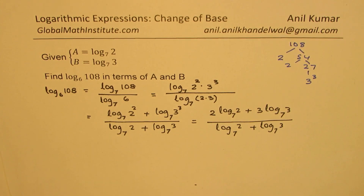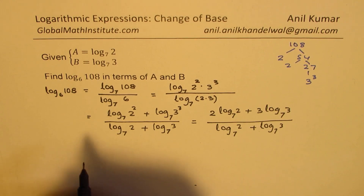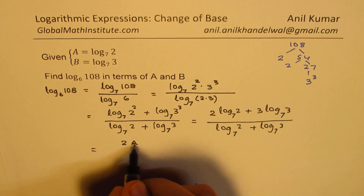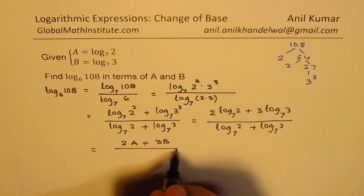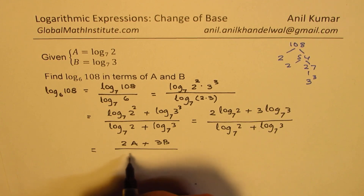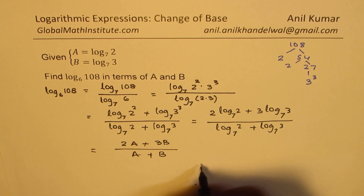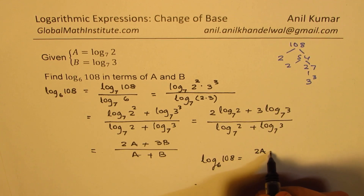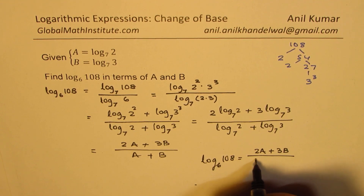Now it is easy substitution. We know log base 7 of 2 is a, and log base 7 of 3 is b. So we get 2a plus 3b over a plus b. Therefore, log base 6 of 108 equals 2a plus 3b over a plus b.